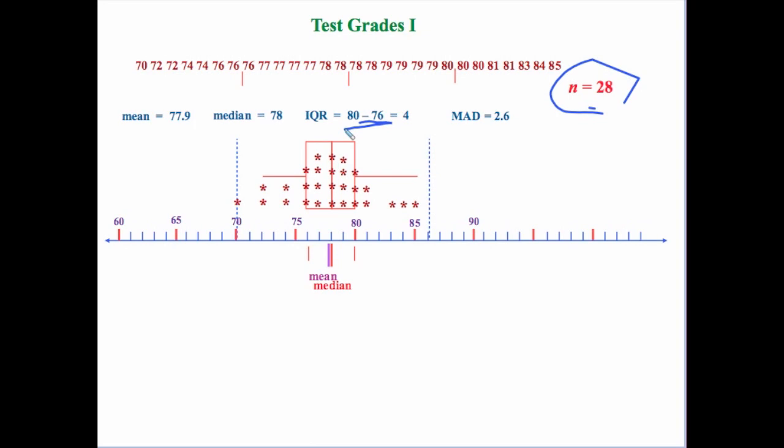Now quite a bit of computation. I have to take all of my data points and figure out how far away each one of those is from the mean of 77.9. And when I do all that I get a mean absolute deviation of 2.6.